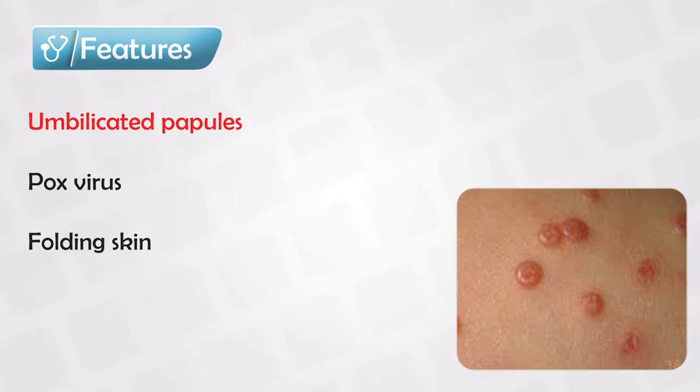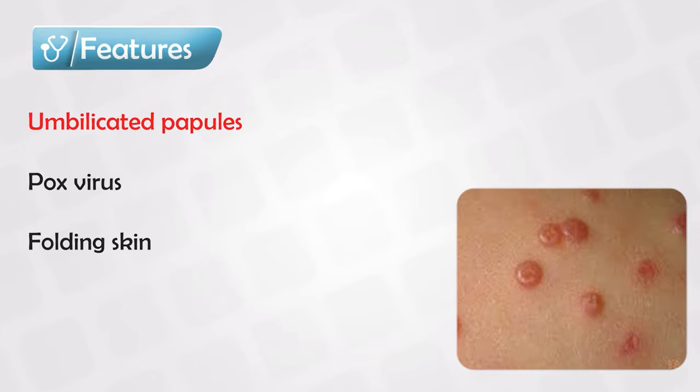These lesions, once started, will spread across the body, and they tend to favor the folding areas, so the armpits and behind the knees.